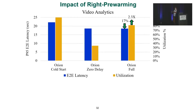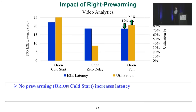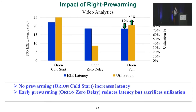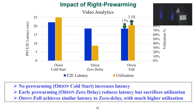Here we evaluate our pre-warming strategy separately. We introduce two variants of Orion: Orion cold start, which performs no pre-warming and achieves high utilization but also high latency; and Orion zero delay, which initializes all VMs from the very beginning, helping latency but decreasing utilization. When we pick the right value for the delay, Orion full achieves similar latency to zero delay without decreasing utilization.